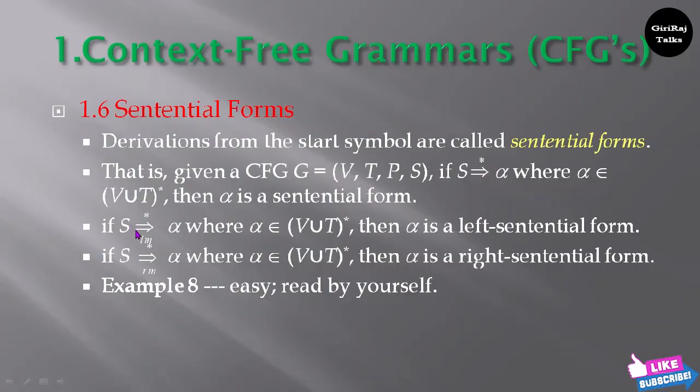If S derives to star alpha where alpha belongs to V union T of star, then alpha is a left sentential form. Here LM is the leftmost derivation.